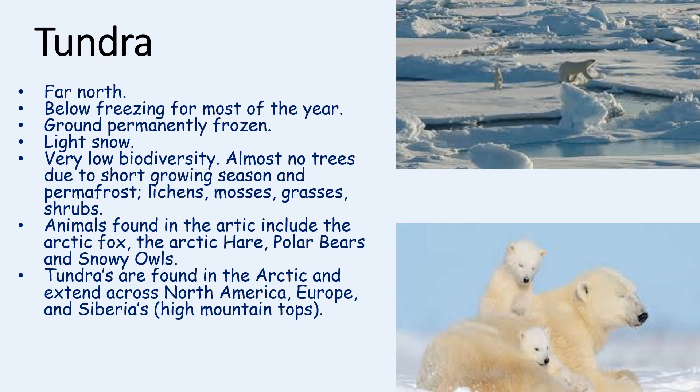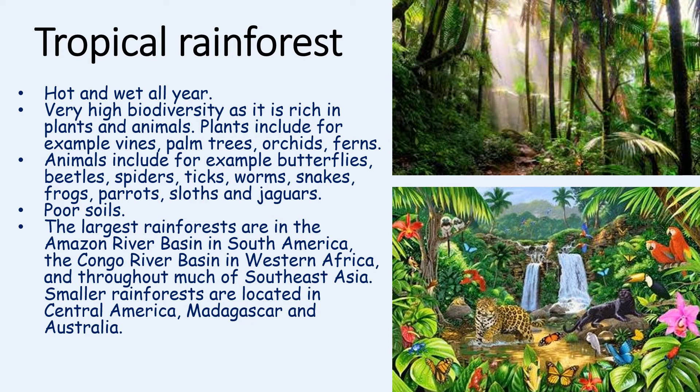The climate of the tropical rainforest is hot and wet all year round, and rainforests are very humid places. Tropical rainforests are the biome with the greatest biodiversity — the biggest number of plant and animal species. Plants include vines, palm trees, orchids and ferns. Animals include butterflies, beetles, spiders, ticks, worms, snakes, frogs, parrots, monkeys, lizards, bats, anteaters, insects, and jaguars.